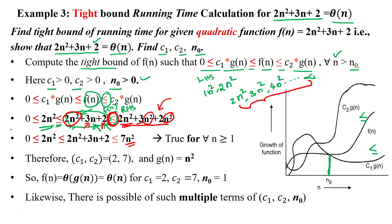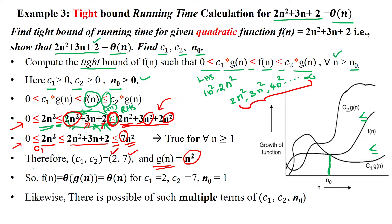When calculating this, we get: 2n² ≤ f(n) = 2n² + 3n + 2 ≤ c2·g(n) = 7n². From this step, we can take c1 = 2 and c2 = 7. The g(n) found here is n².